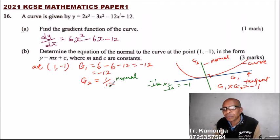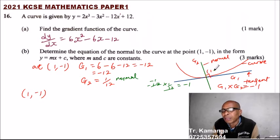Now, when you are given the gradient and one point, you can be able to find the equation of a line. So what we do, we take the point 1 and minus 1. This is the point we assume at the point of contact here. So, we take another imaginary point x and y, and the gradient is 1 over 12.